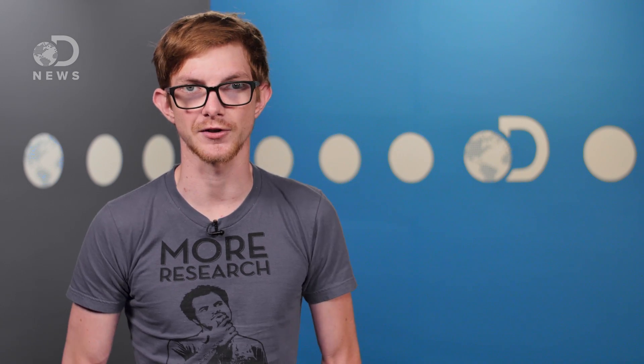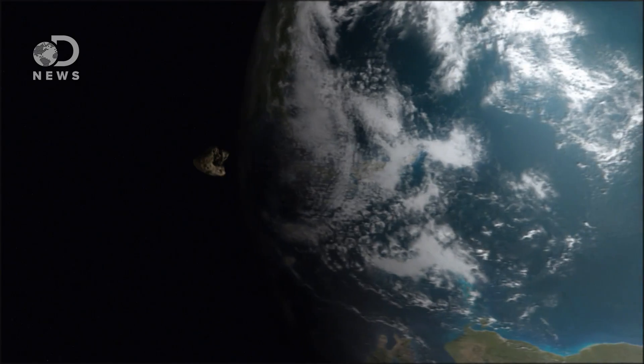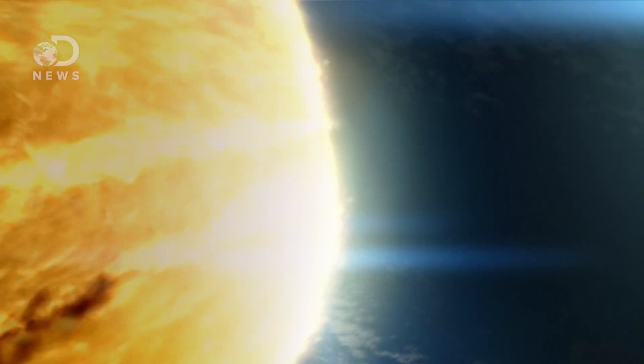Even with the atmosphere intercepting most space rocks before they can impact the surface, Earth still gets hit with a biggie every now and then. NASA estimates an asteroid the size of a football field gets through and causes significant damage to the local area once every 2,000 years. If it's over a kilometer wide, it could have global impacts. The asteroid that wiped out the dinosaurs was estimated to be 10 kilometers across.